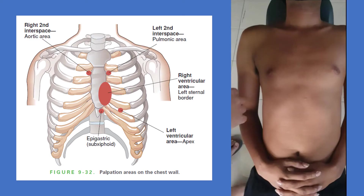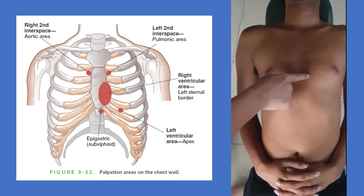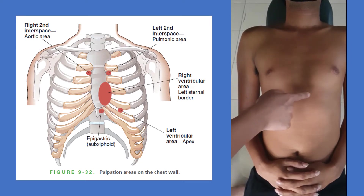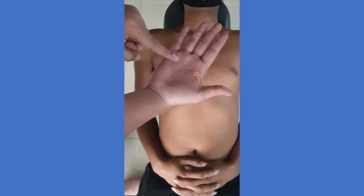When doing palpation, familiarize yourself with the areas to palpate: the right second interspace, left second interspace, right ventricular area, epigastric area, and left ventricular area. To palpate heaves and lifts, use your palm or hold your finger pads flat or obliquely against the chest. Do not rub or rotate your hand — just place it over the chest without unnecessary motions.